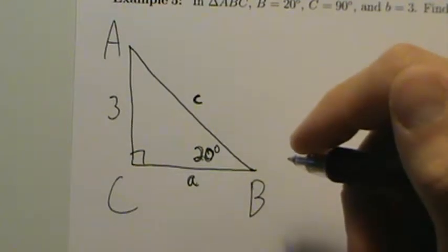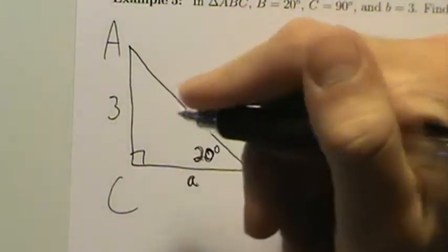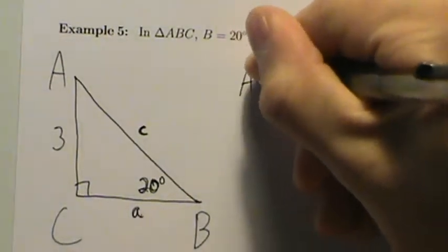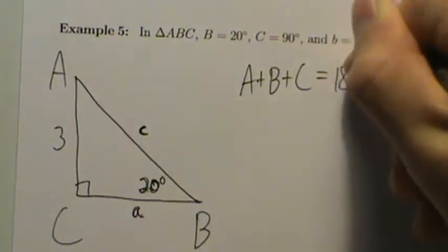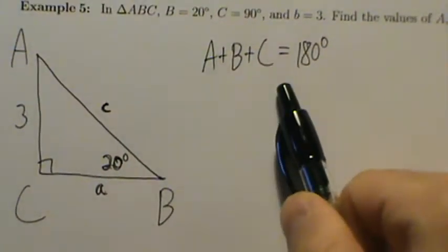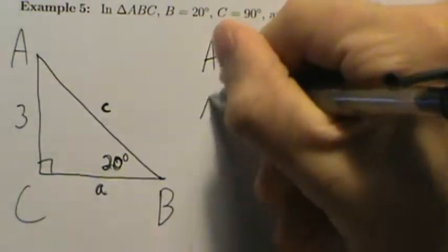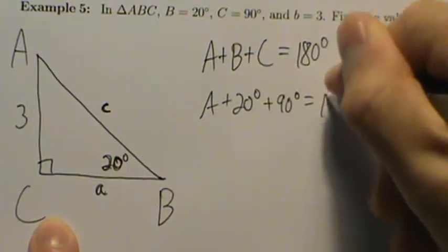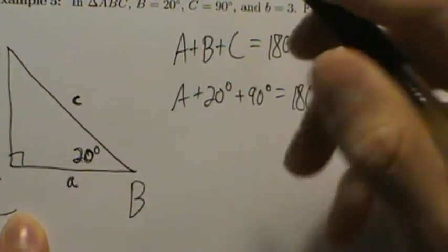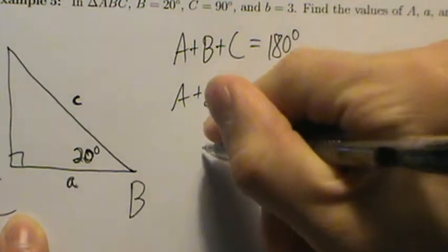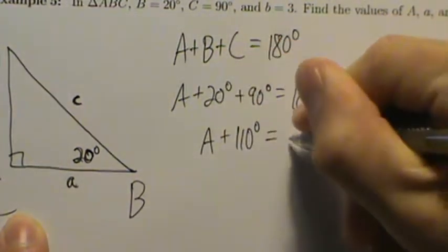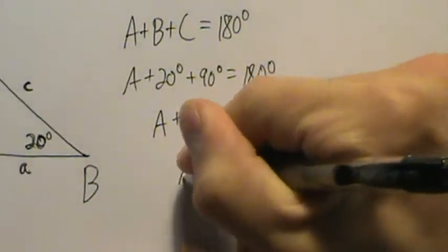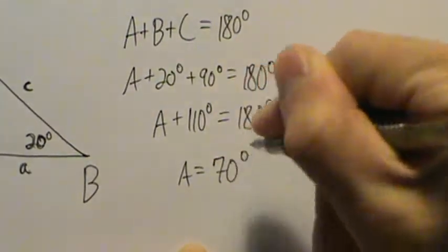First, we know that all three angles in a triangle add up to 180 degrees, so A plus B plus C equals 180 degrees. We know B and C, so we can solve for A. A plus 20 degrees plus 90 degrees equals 180 degrees. 20 plus 90 is 110, so A plus 110 degrees equals 180 degrees. Subtracting 110 from both sides gives us A equals 70 degrees.